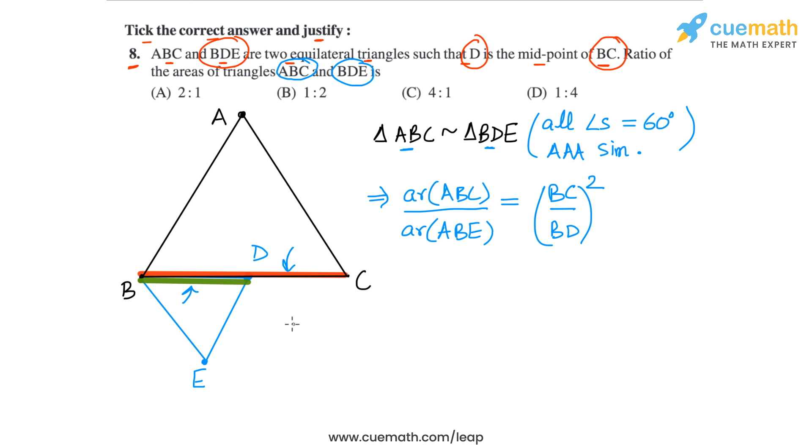But BC is twice of BD, because D is the midpoint of BC. So we can say that BC is twice of BD or BC by BD is simply equal to 2. So BC by BD square will be equal to 2 square or 4. So the ratio of areas is 4, which you can write as 4 is to 1.